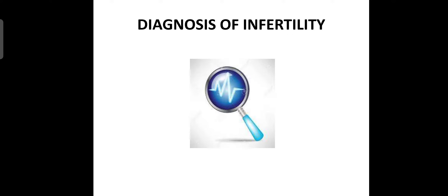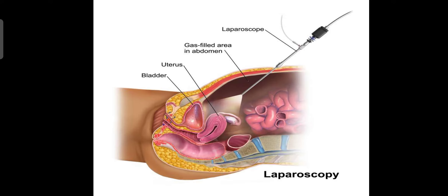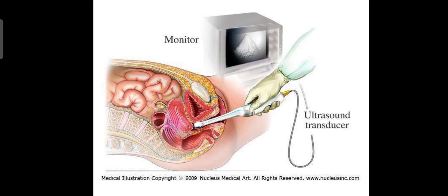For the diagnosis of infertility, the first method is laparoscopy, where the bladder, uterus, or abdominal area is visualized through a laparoscope to identify any structural abnormality in the female genital organs. The next diagnostic method is ultrasound — specifically per-vaginal ultrasonography (transvaginal ultrasound).